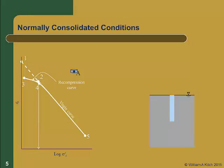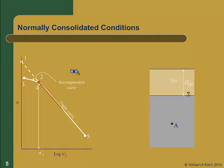Using this laboratory data we can determine the preconsolidation stress sigma prime c. Now going back to the field before we took the sample, the soil at point A is at an effective stress represented by point 2. If we were to build a fill on this soil with some thickness H fill and unit weight gamma fill, that puts an additional stress on the soil, and the soil will consolidate and travel down the virgin curve from point 2 to point 6. The amount of stress increase will be gamma fill times H fill.